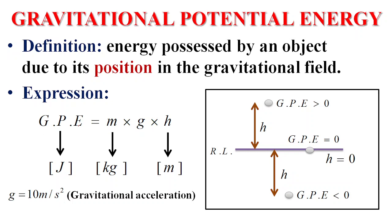The expression for gravitational potential energy is GPE equals MGH. Mass times gravity times height. Mass in kilograms, G in meters per second squared, height in meters. If the object is on the reference level, the height will be 0 and GPE is zero. Object above reference, GPE will be positive. Object below reference, GPE negative.